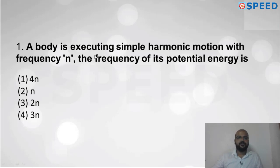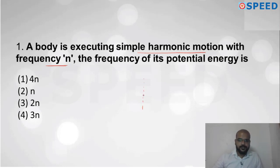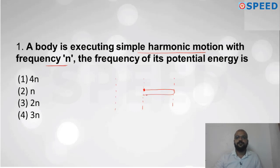In this question, simple harmonic motion is given with frequency N. In SHM, the particle moves from mean position to extreme position, then comes back from extreme to mean position, and repeats this cycle. The frequency of this SHM is N, and he is asking: what is the frequency of potential energy?